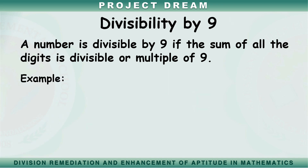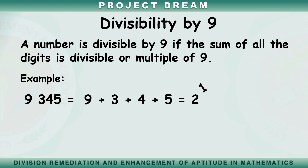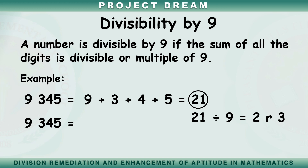Another example: is 9,345 divisible by 9? Let's get the sum of the 4 digits: 9 plus 3 plus 4 plus 5 equals 21. The sum of the digits is 21. Is 21 divisible by or a multiple of 9? Can we divide 21 by 9 without remainder? No — 21 divided by 9 equals 2 remainder 3. Therefore, 9,345 is not divisible by 9.